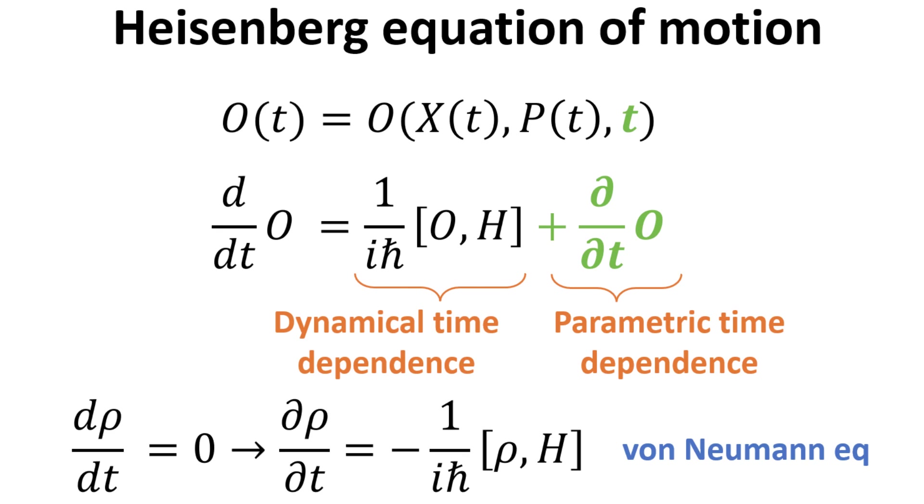Lastly, I will remark that sometimes the operator O can also contain an explicit time dependence. The Heisenberg equation of motion in this case will include another term that describes the parametric time dependence as shown.